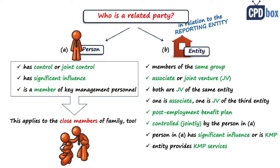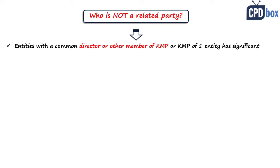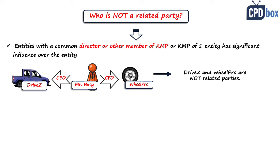IAS 24 also provides guidance about who is NOT a related party. Entities are not related parties simply because they have a director or other key management personnel member in common, or because a key management personnel member of one entity has significant influence over the other. For example, if Mr. Busy is a CEO of DriveZ and at the same time a CFO — or holds a 30% share — in Wheel Pro, DriveZ and Wheel Pro are not related parties to each other. Mr. Busy is related to both of them, but mutually they are not related.